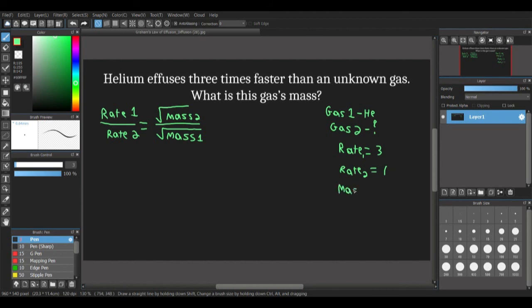Next, we need our masses. The mass of helium, or mass₁, is going to be equal to 4.00. We get that from the periodic table. And then mass₂ is what we're going to be solving for. So now, we can plug in. We have 3 over 1 equals the square root of mass₂ divided by the square root of 4.00.